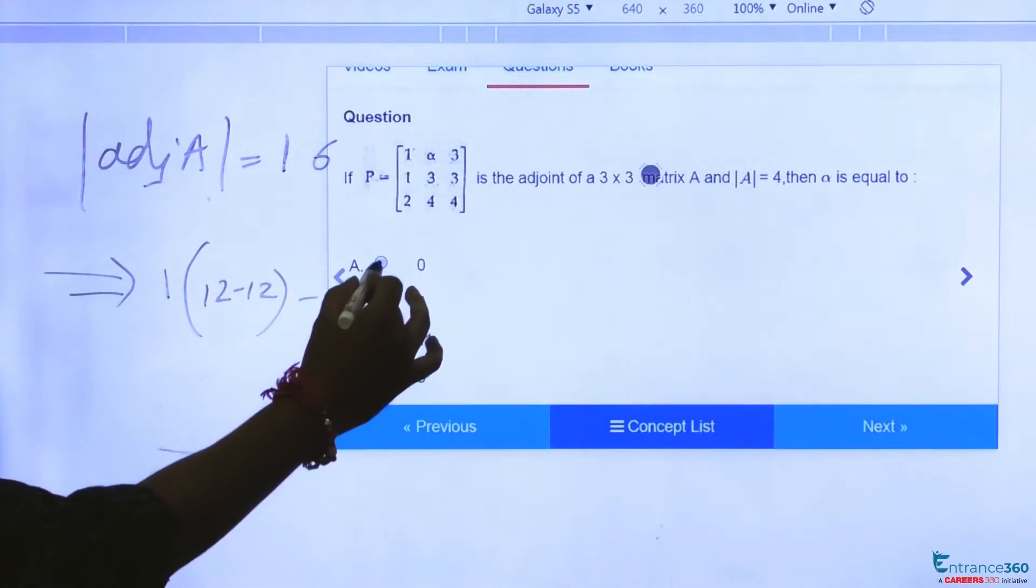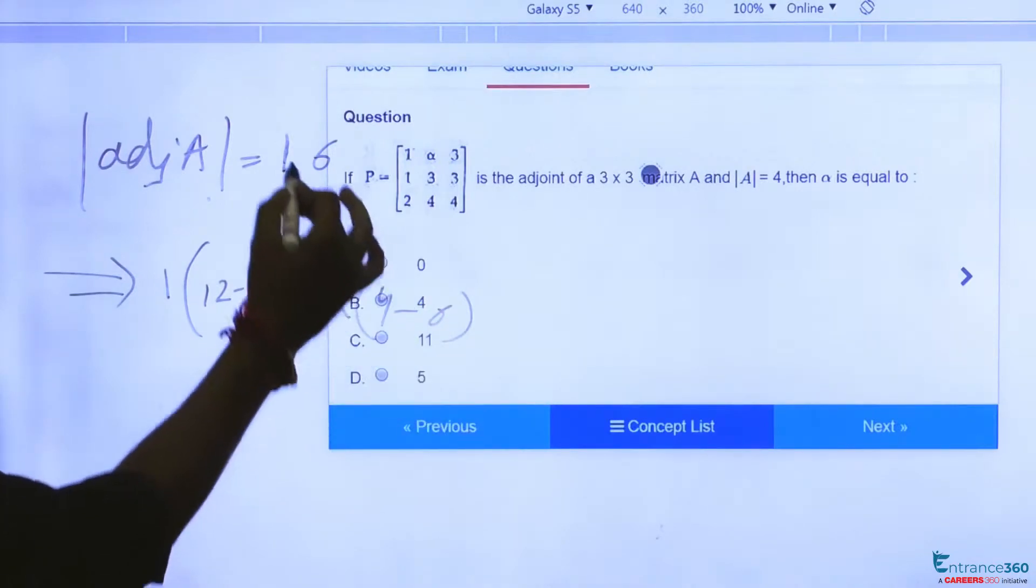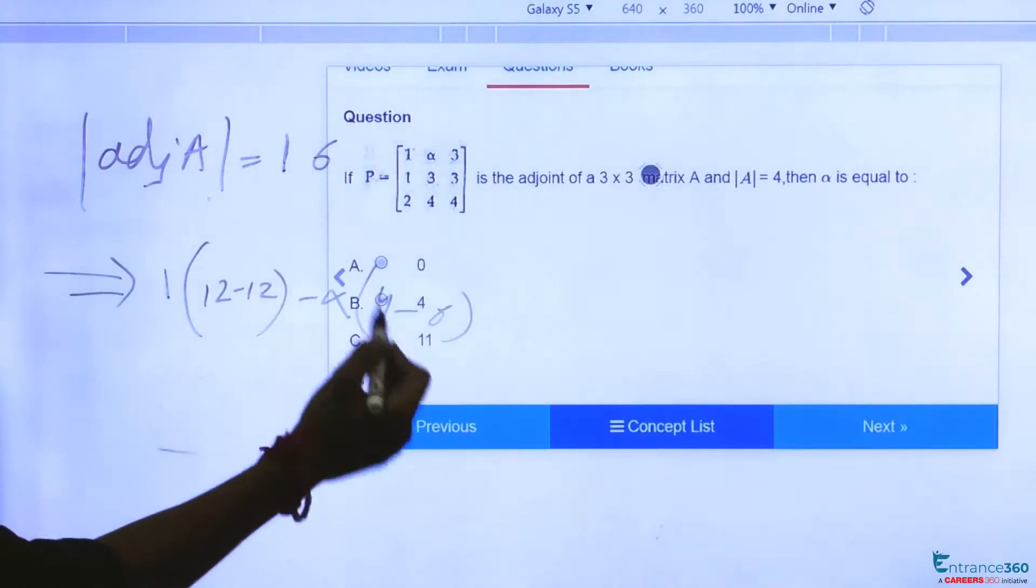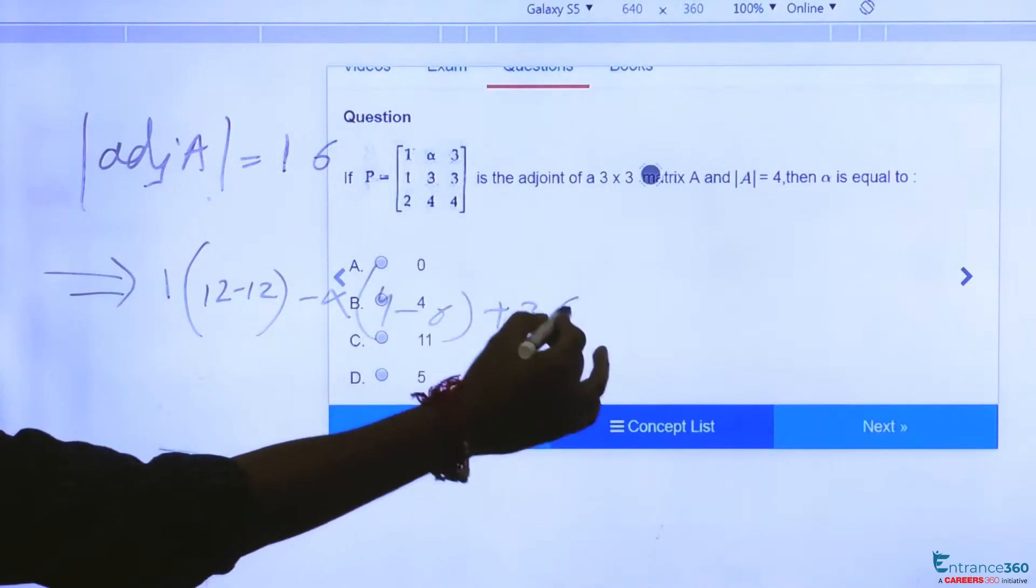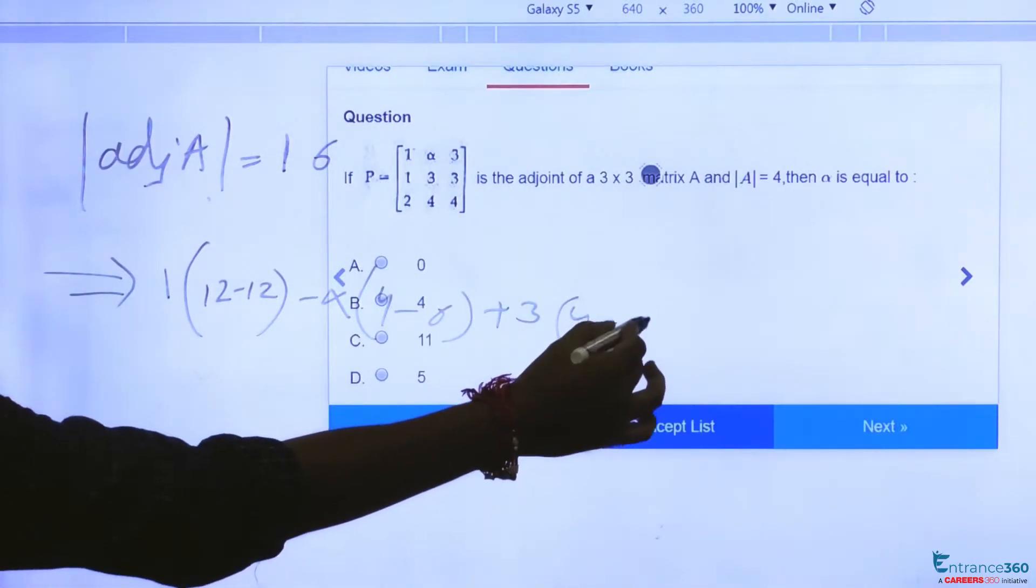Then minus alpha into (4 minus 6). 1 into 4 is 4, 2 into 3 is 6, so 4 minus 6. Then plus 3 times (1 into 4), which is 4 minus 6 again.